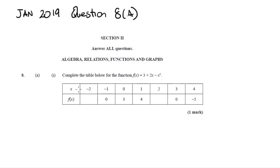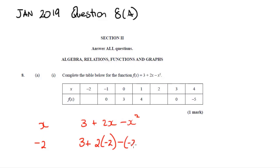First we want to find the missing values in the table — when x is negative two and when x is two. When x is negative two, I put it into the function: three plus two times negative two, minus negative two squared. That gives me three minus four minus four, which is negative one minus four, giving me negative five. So when x is negative two, f(x) is negative five.